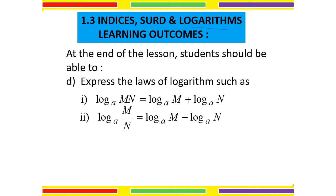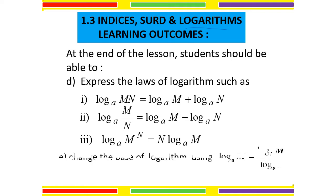The second law: log to the base A of M divided by N is equal to log to the base A of M minus log to the base A of N. The third one: log to the base A of M to the power of N is equal to N times log to the base A of M.